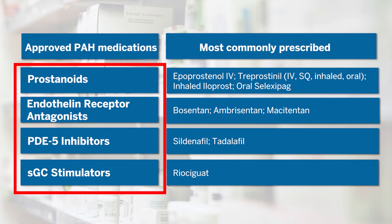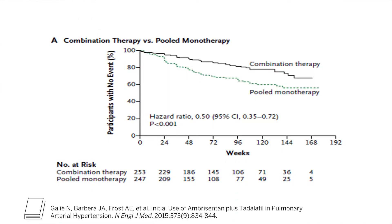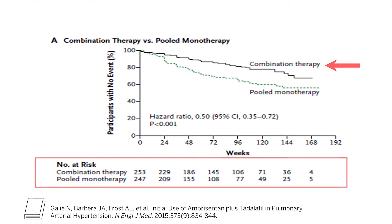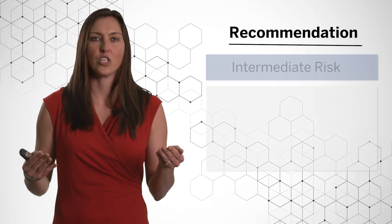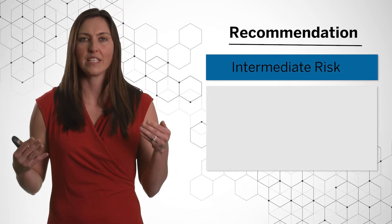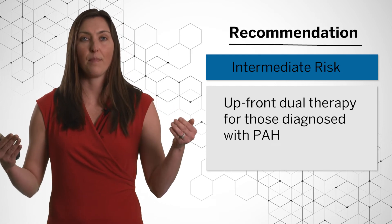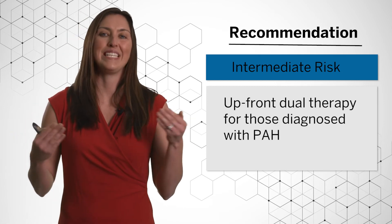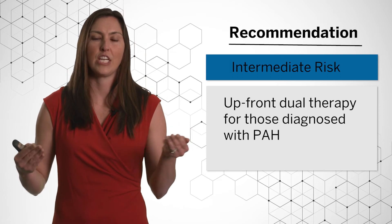This recommendation — for example, a combination of ambrisentan and tadalafil — came out of the AMBITION trial, which demonstrated that those who received combination therapy in comparison to monotherapy of either one of these medications had improvement in their functional status. Therefore, the current recommendation for those who are intermediate risk is to use upfront dual therapy for those who have been diagnosed with pulmonary arterial hypertension.